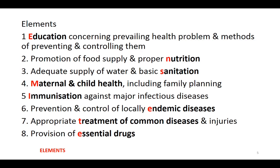Next are the elements of primary health care. There are eight elements, and the mnemonic itself spells out the elements: E stands for Education, then Immunization (remembered as L), another E for Endemic disease control, M for Maternal and child health, another E for Essential drugs, N for Nutrition, T for Treatment of common diseases and injuries, and S for Sanitation.